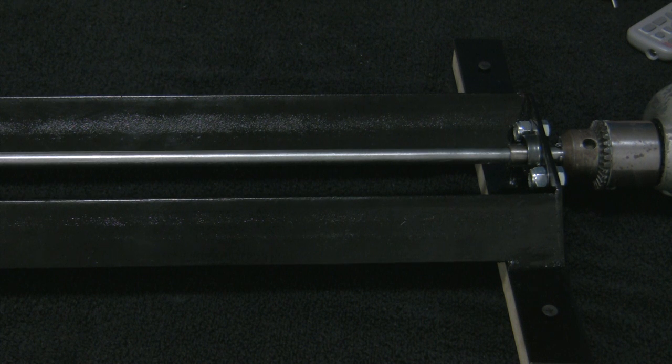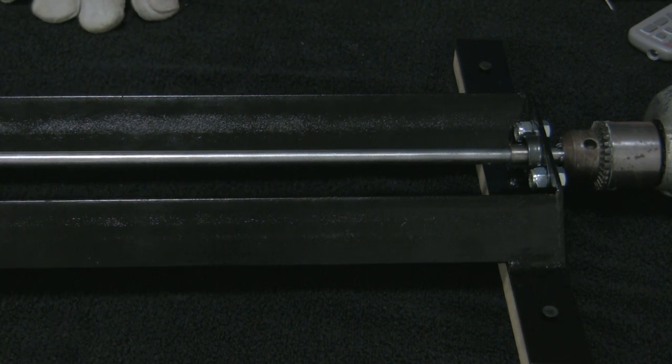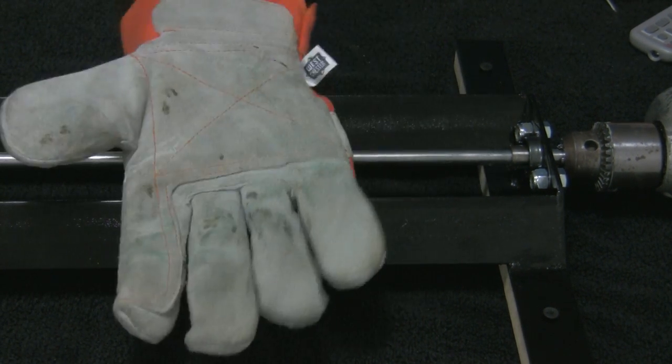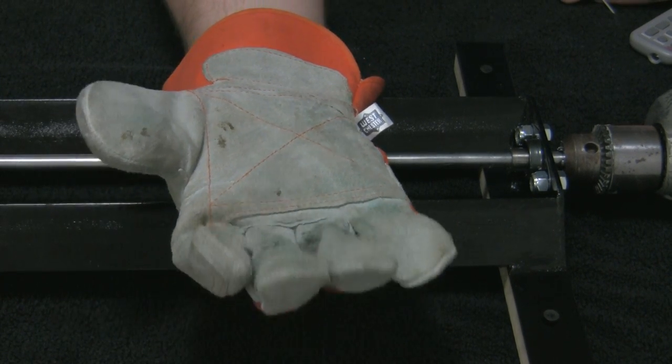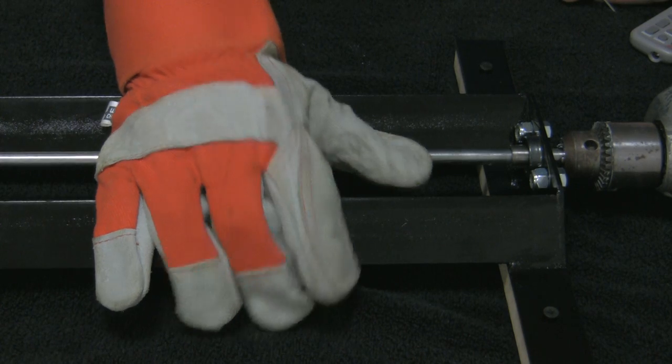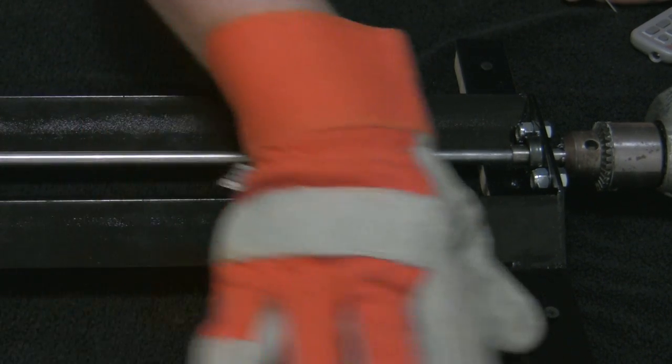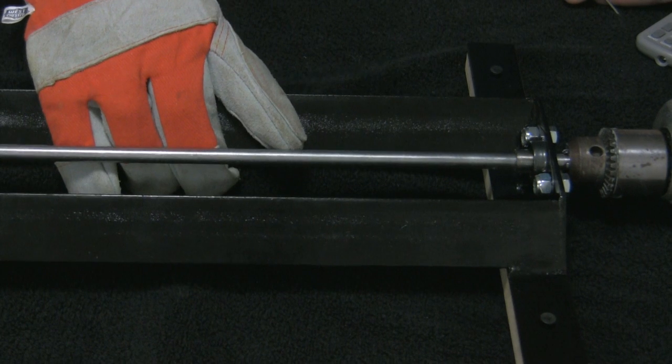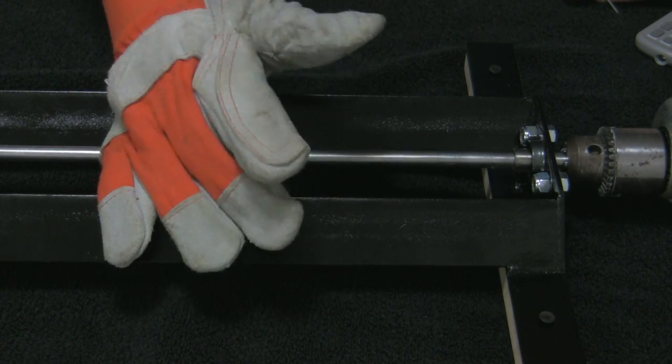One last really important thing that I forgot to mention in the list of tools is a glove. Very, very important when you're working with the steel wire. It tends to want to unwind on you when you get right to the end of the spring, so it's really important to have some hand protection.